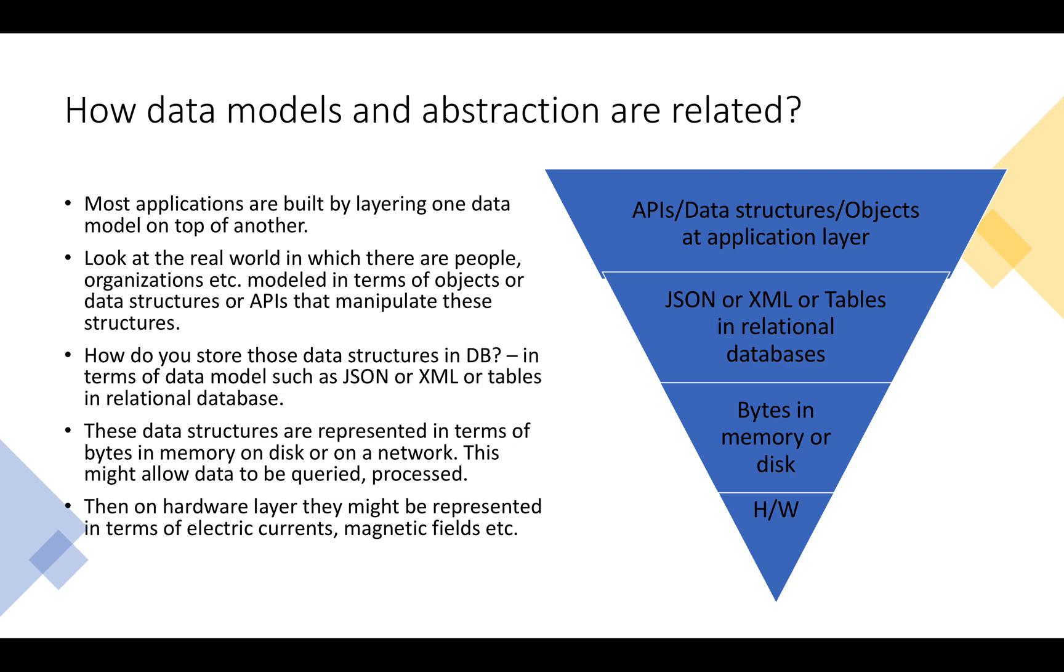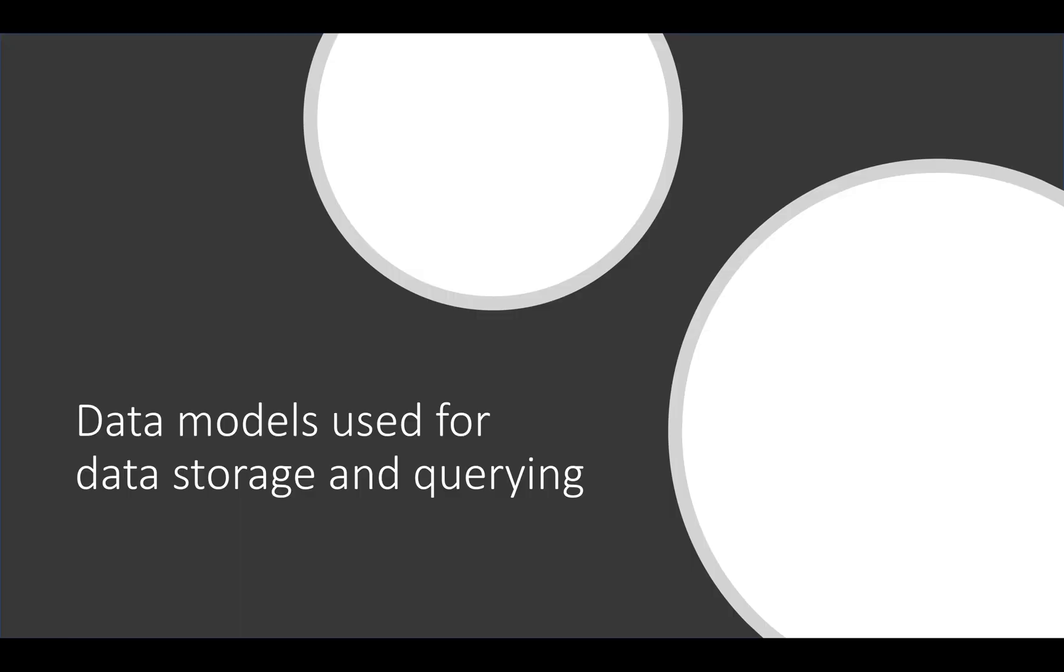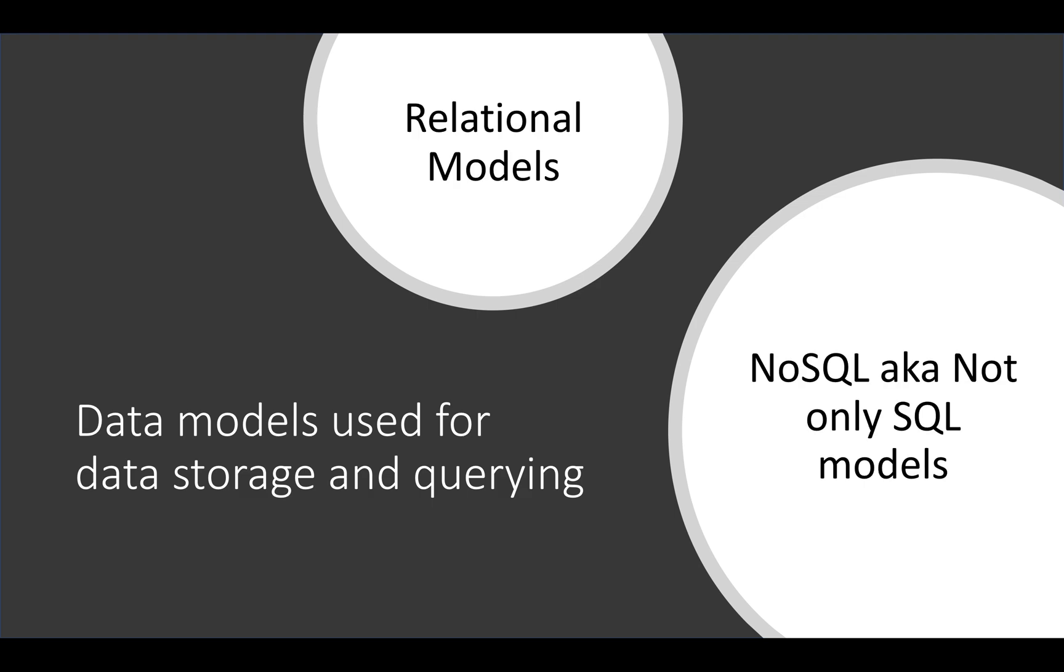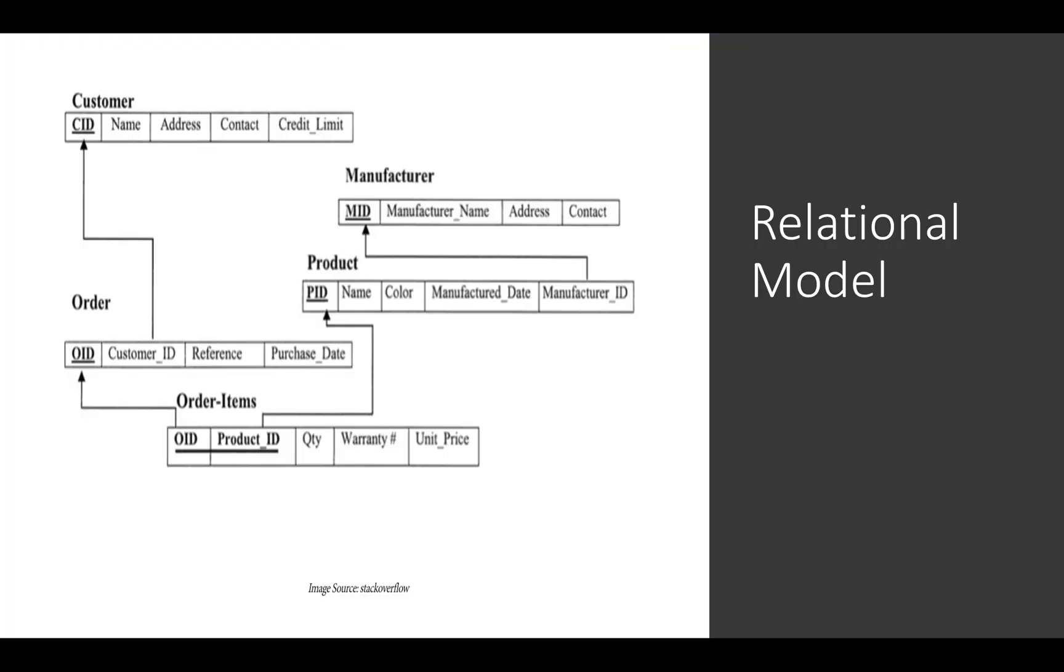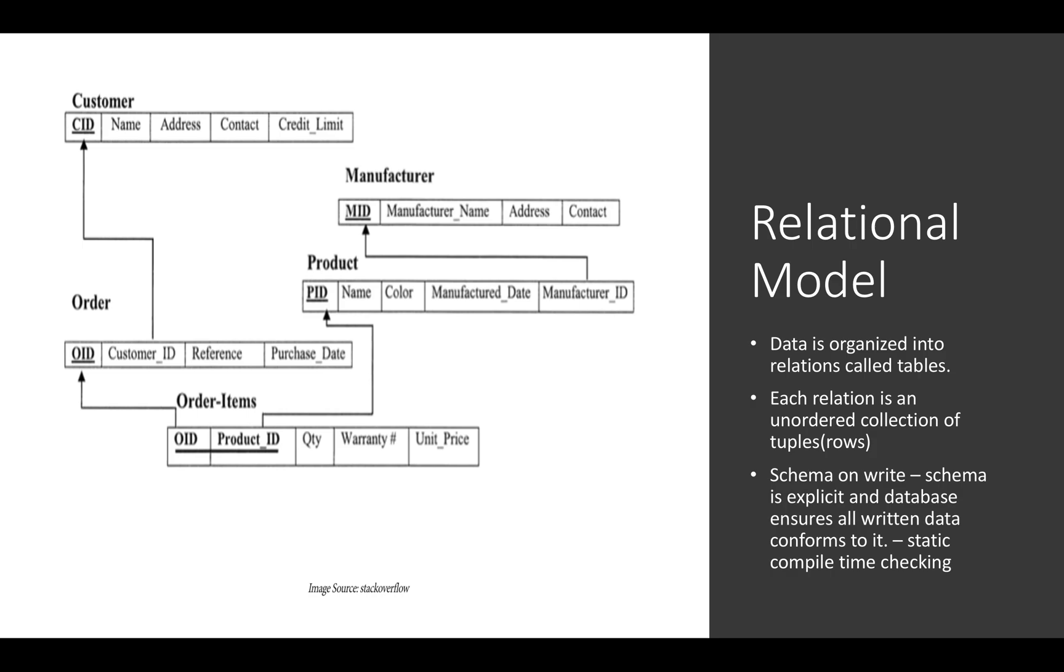Data model helps us to define an abstract model for the database. What are the different data models used for data storage and querying? We'll look into the relational models and non-relational models in this video. Let us first understand what are the relational models. Relational models help us to organize the data into relations called tables. Each relation is an unordered collection of tuples and rows. Let us see by this example, here a customer places an order and an order has multiple items.